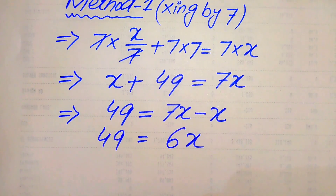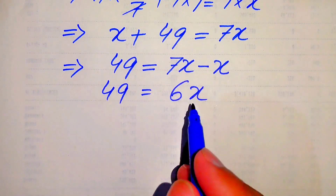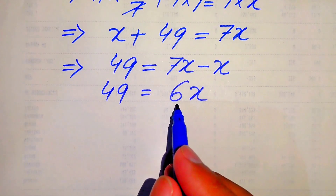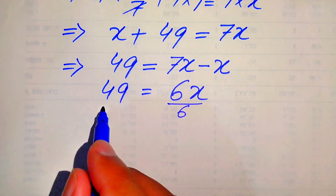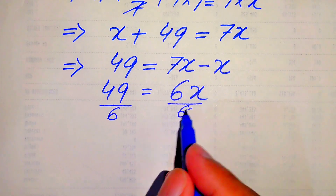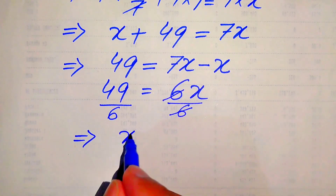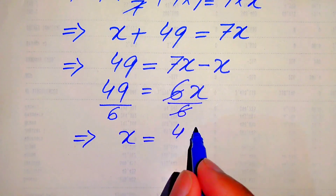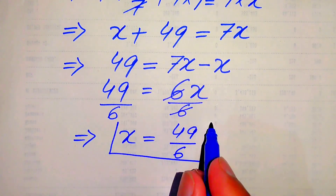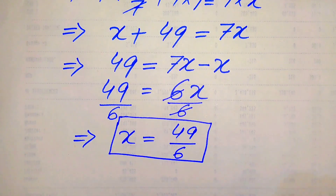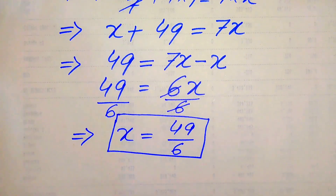We have 49 equals 6x. Since we are solving for x, we divide both sides by 6. This 6 is cancelled out by this 6, and we have x equals 49 divided by 6. So this is the value of x from the first method.